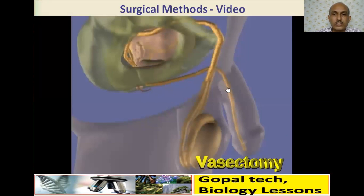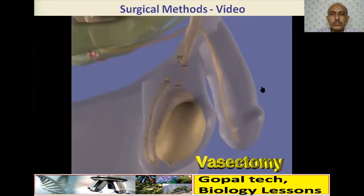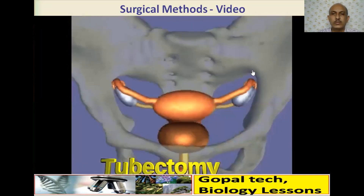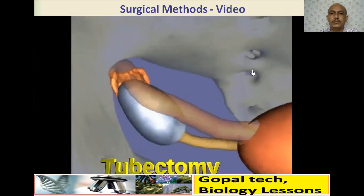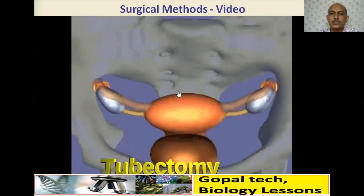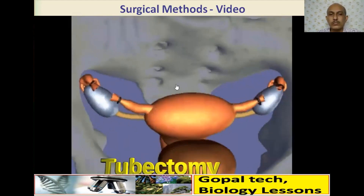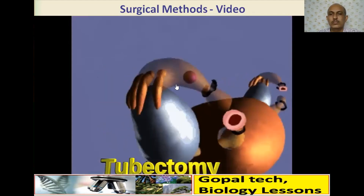In vasectomy, the vas deferens is permanently divided — sperms are produced and travel up to the cut but cannot pass into the urethra. In tubal ligation (tubectomy), the fallopian tubes are cut and ligated — the ova are produced but cannot transfer to the uterus. This division creates a barrier between sperm and ova, preventing fertilization.